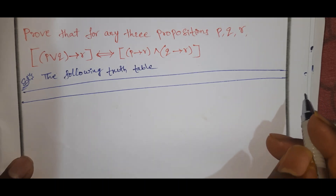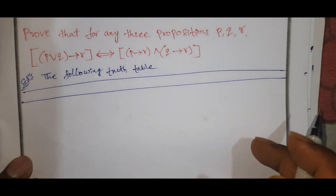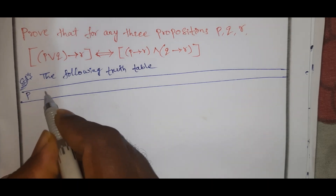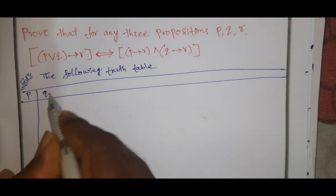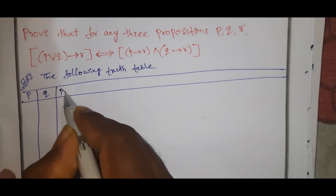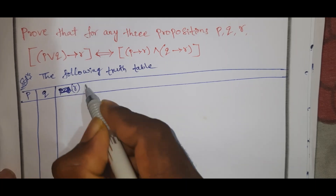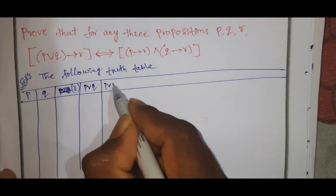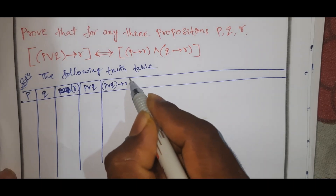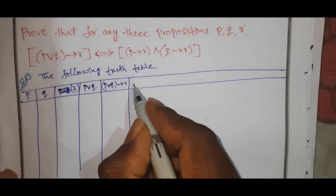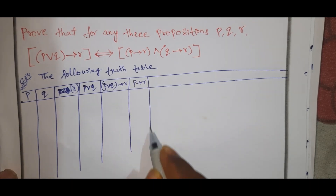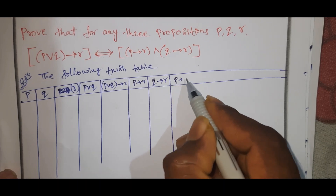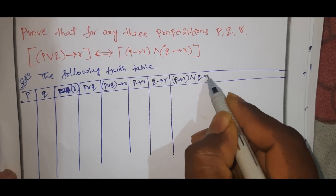Truth is tautology, false is contingency, the result is contradiction. The columns are: P, next Q, next P→R, Q→R, then P→R and Q→R, conditional R.